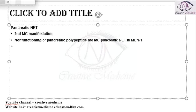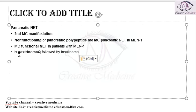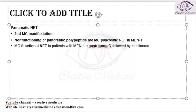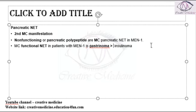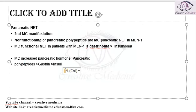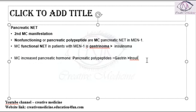The most common functioning neuroendocrine tumor is gastrinoma, followed by insulinoma. If asked what is the most common pancreatic hormone increased in neuroendocrine tumor: pancreatic polypeptide is most commonly increased, followed by gastrin, and then insulin.